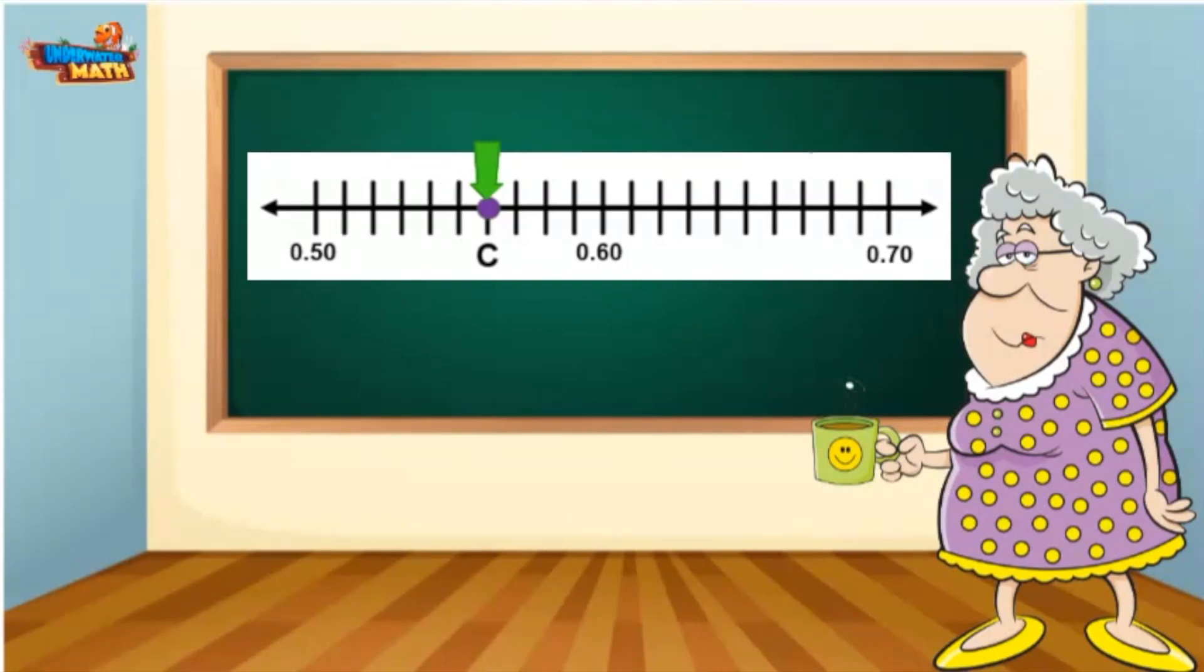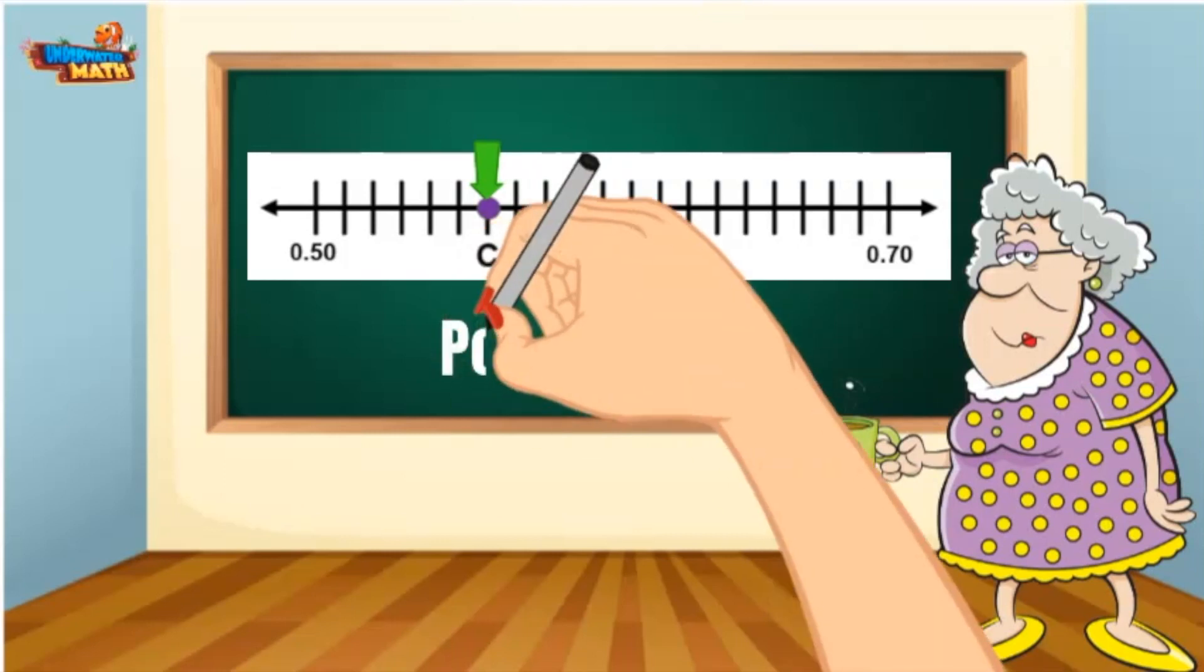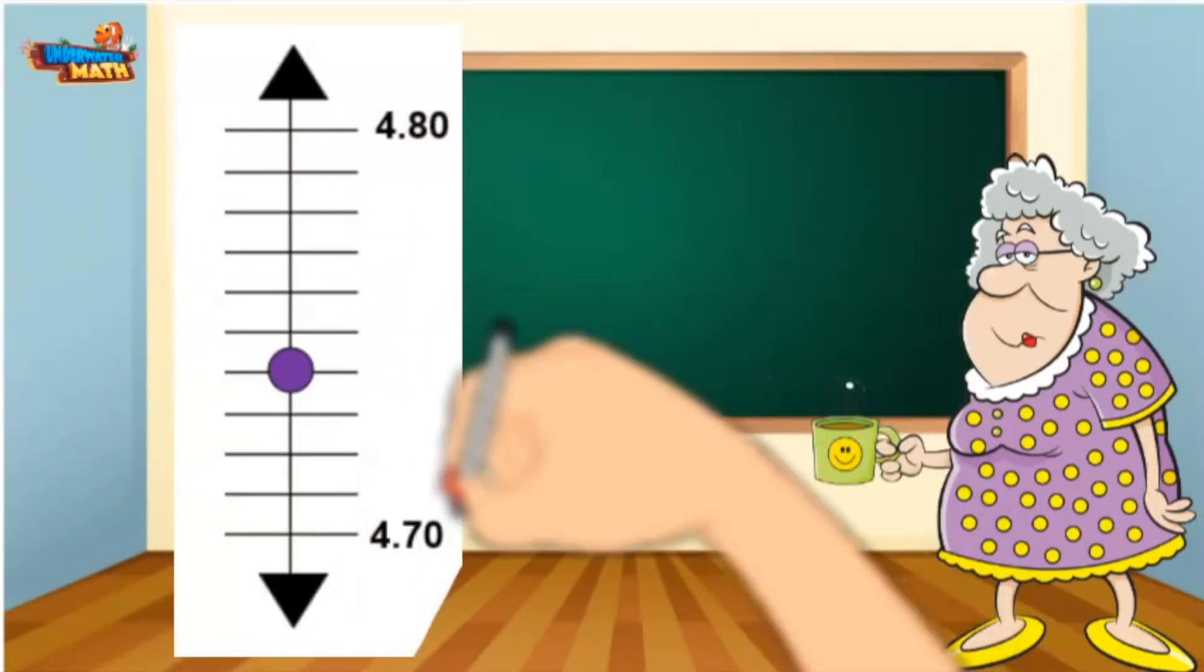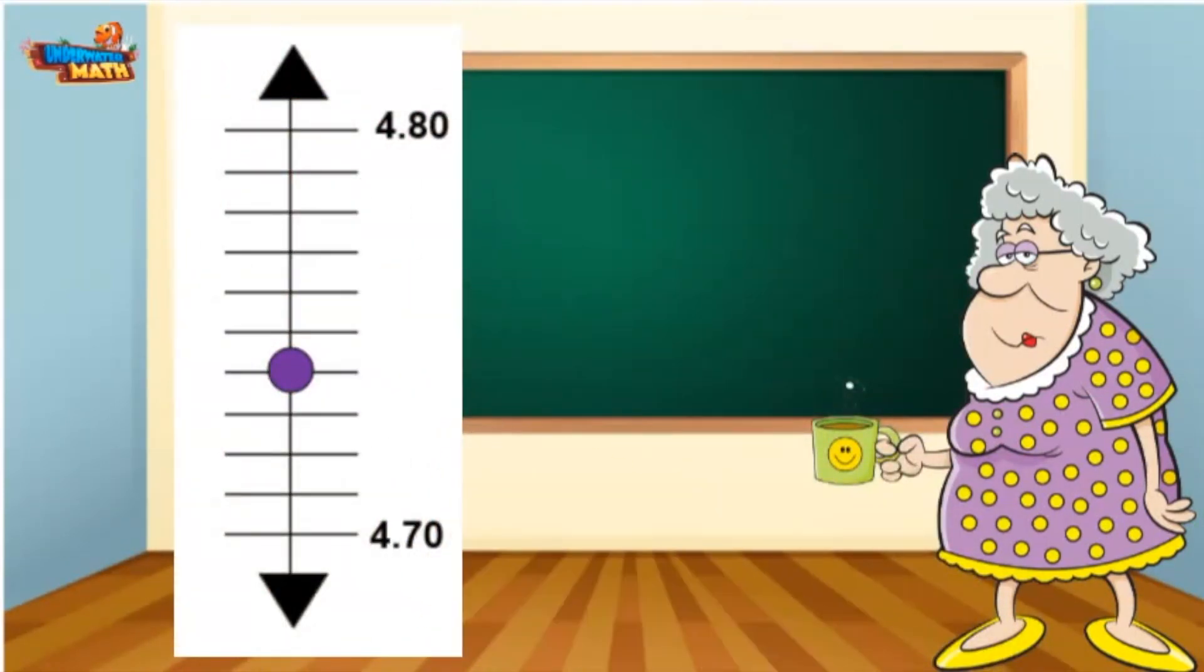Wait a second, look at this number line. He's so big he doesn't even fit on my board, and he's vertical instead of horizontal. Number lines didn't look like this back in my day. Oh well, we need to determine the decimal represented by the point on the number line. The point is between 4 and 70 hundredths and 4 and 80 hundredths.